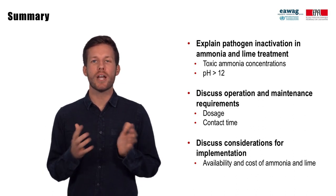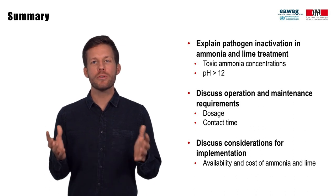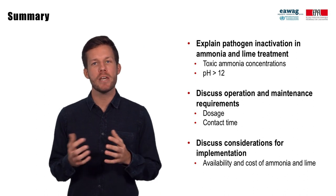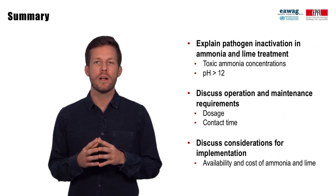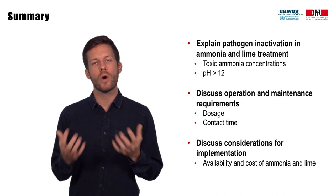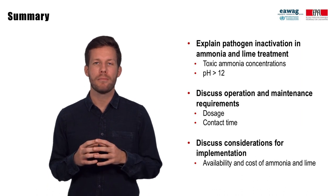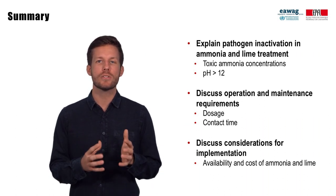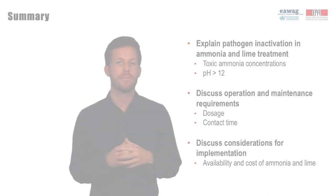In this module, we introduced lime and ammonia treatment — two technologies for pathogen inactivation. In both technologies, the toxicity of ammonia and a high pH are the main mechanisms for pathogen inactivation. The effectiveness depends on the type and concentration of pathogens, the dosage of lime or ammonia required to produce environments toxic to pathogens, and the contact time. For long-term operation, it is important to consider that both technologies rely on a reliable supply of ammonia — in the form of urine or urea — and lime.